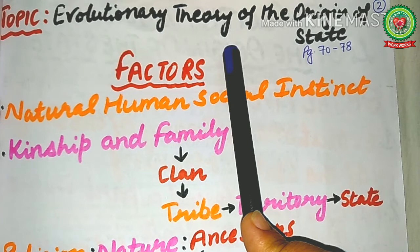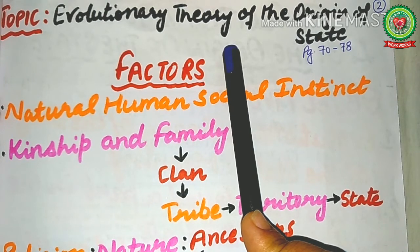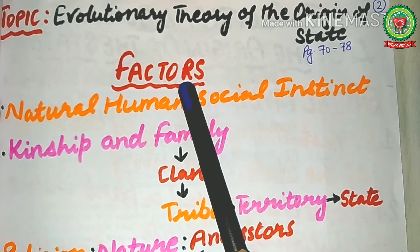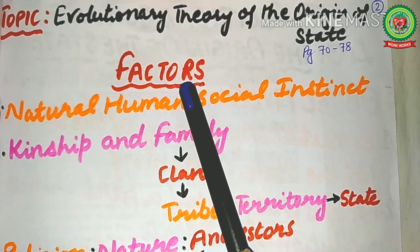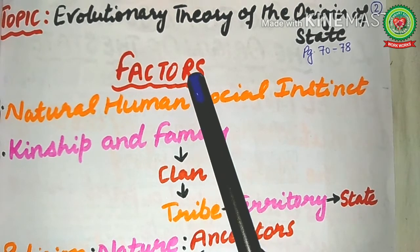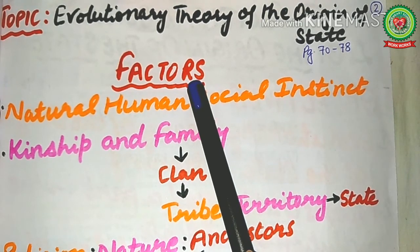It is assured that the state originated in times very ancient and developed into its modern form — the nation state — in the modern period of history. Several factors played a part in its origin and evolution, and there are some key factors that I would like to discuss with you.